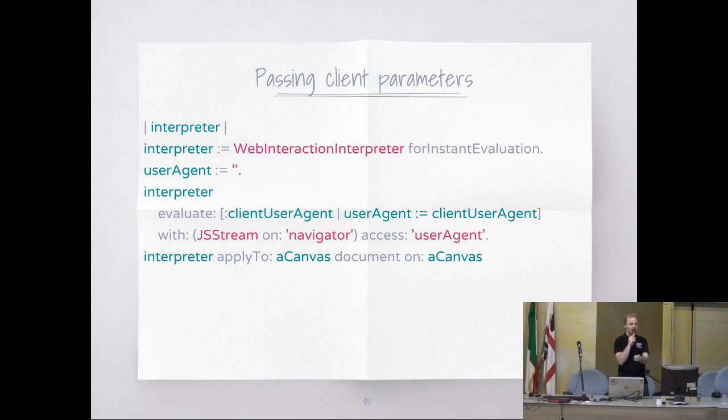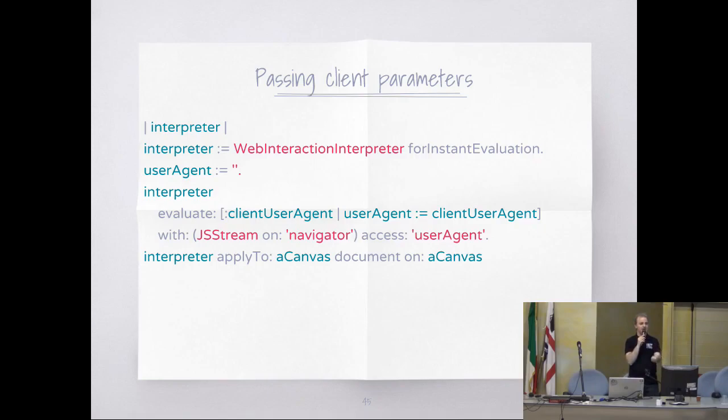We do an AJAX call — it will evaluate the call, and the part that is in the 'with' block — in this simplified example — gets the user agent string. Usually it would come in a request, but this could be any piece of JavaScript you need. That value gets serialized in the AJAX call.